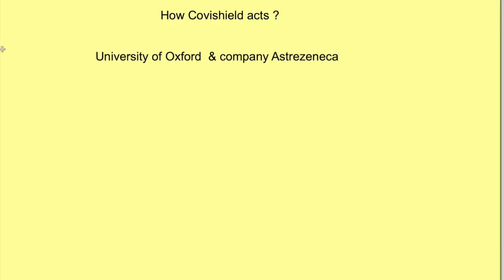Covishield vaccine is the product of the University of Oxford and company AstraZeneca. For understanding how Covishield acts, we need to be a little bit aware about the structure of coronavirus.